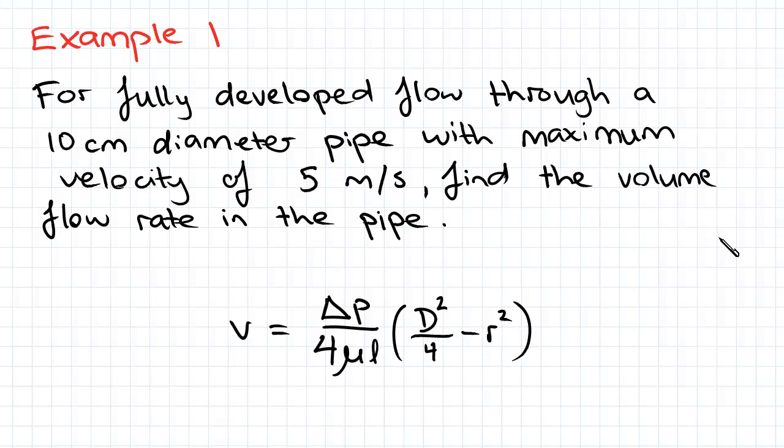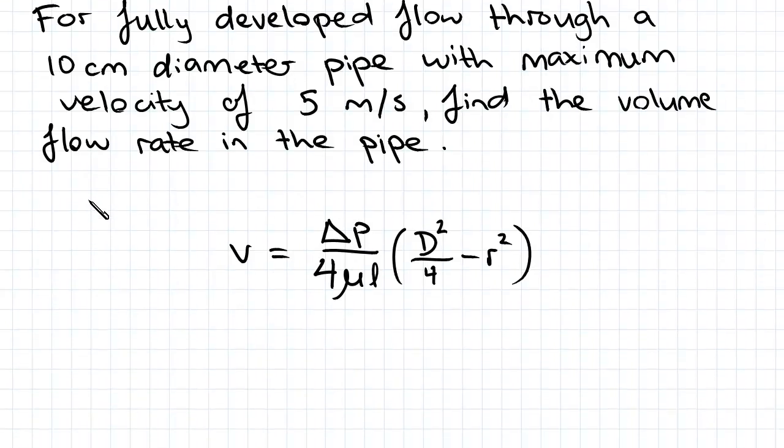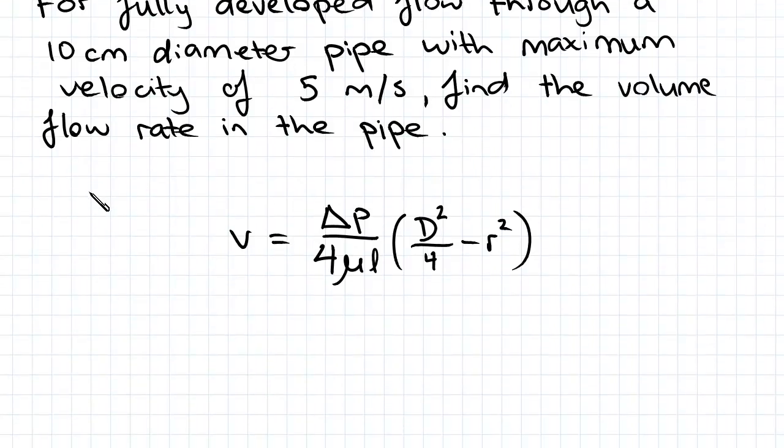So the volume flow rate uses V average. We need to make sure we're using V average for this one. It's quite a simple example, so there's not too much to calculate here.